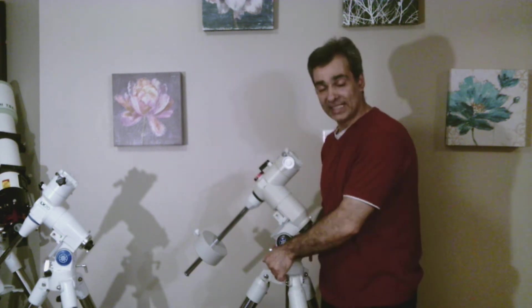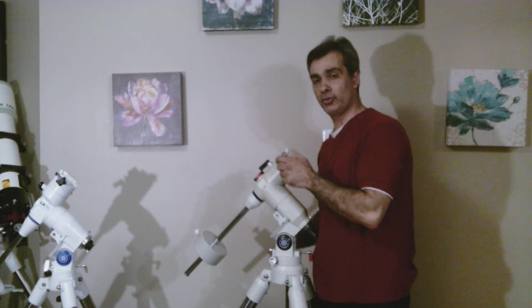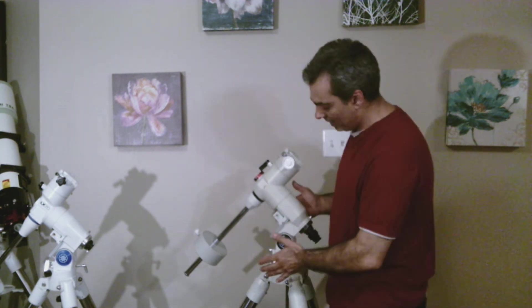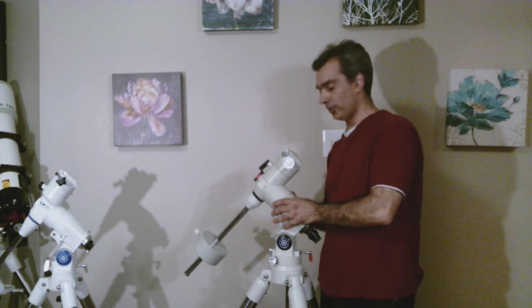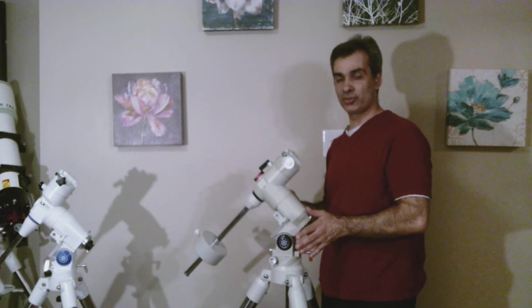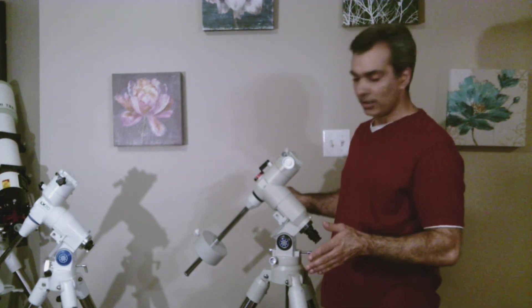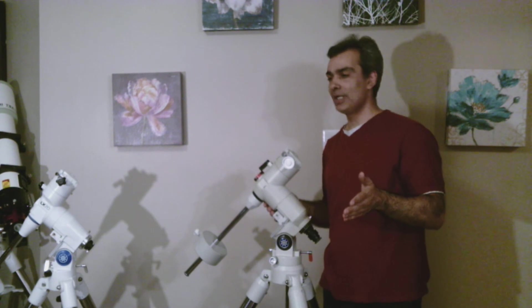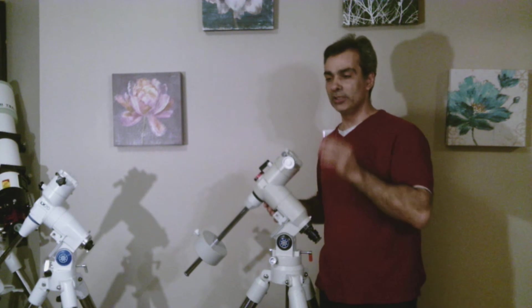This originally was a Go-To mount. I just stripped the Go-To system out of it with the hand control and I'm actually just going to be converting it to a manual mount with dual axis drive. The reason is, a lot of times those Go-To features, by the time you align it, time, date, latitude, longitude...